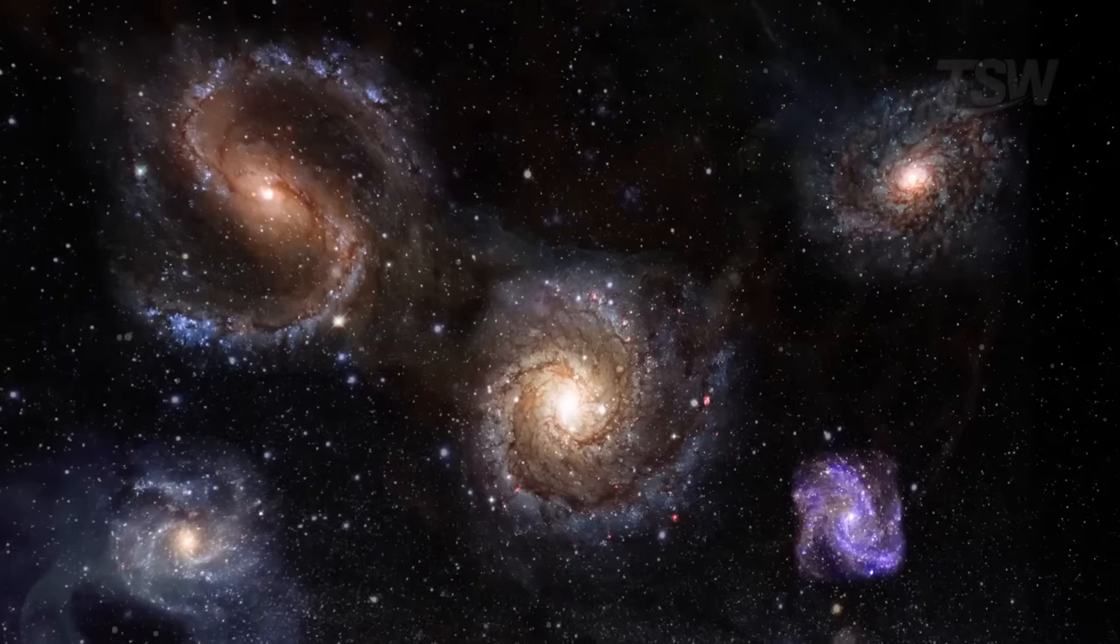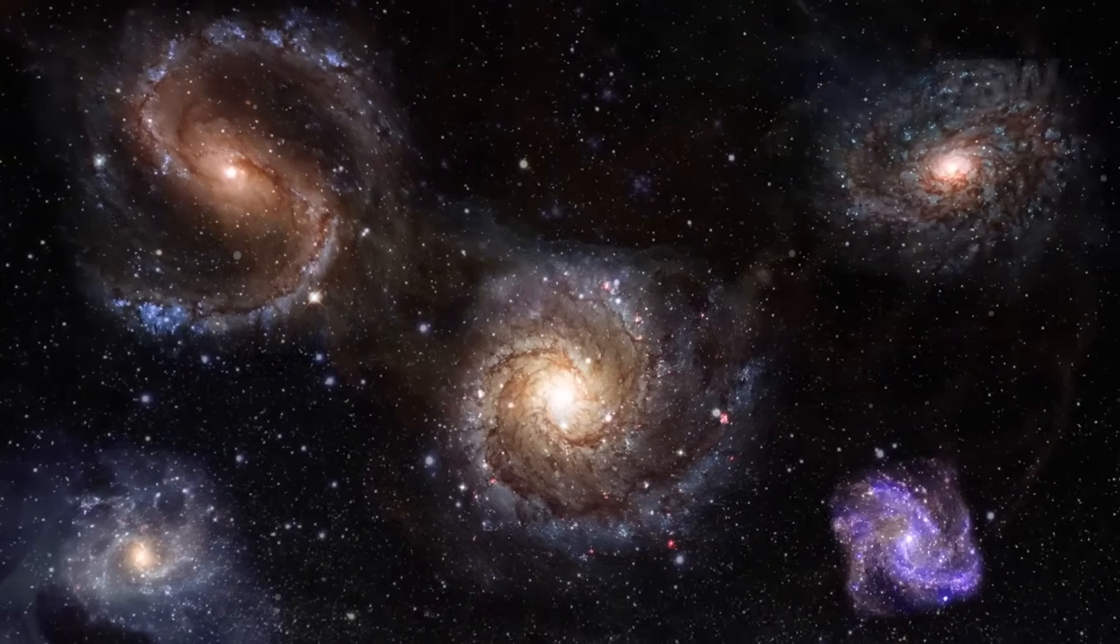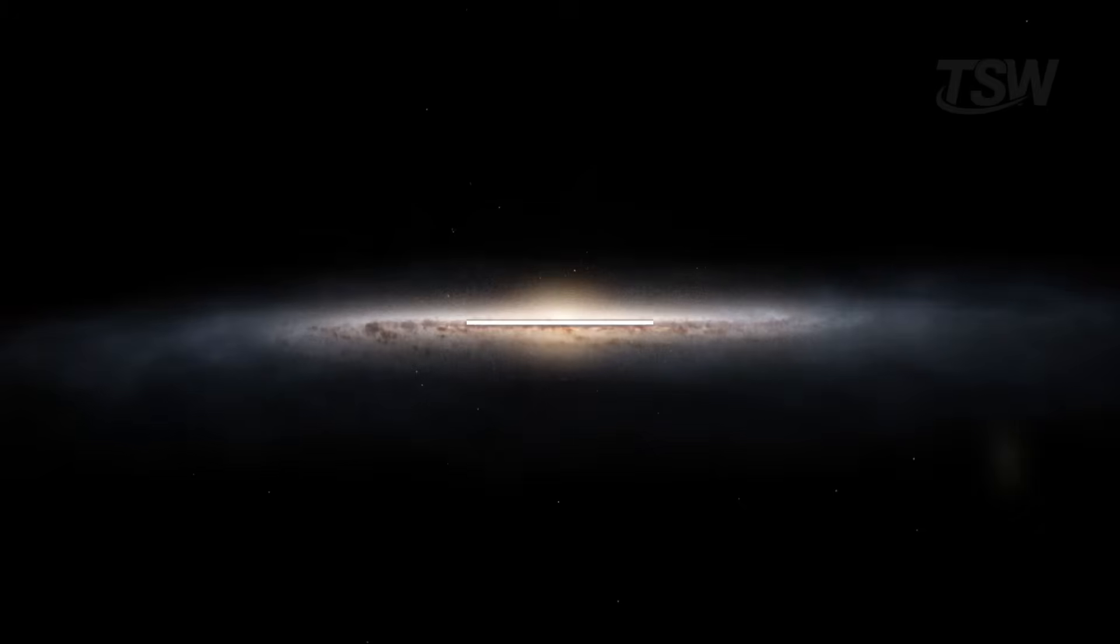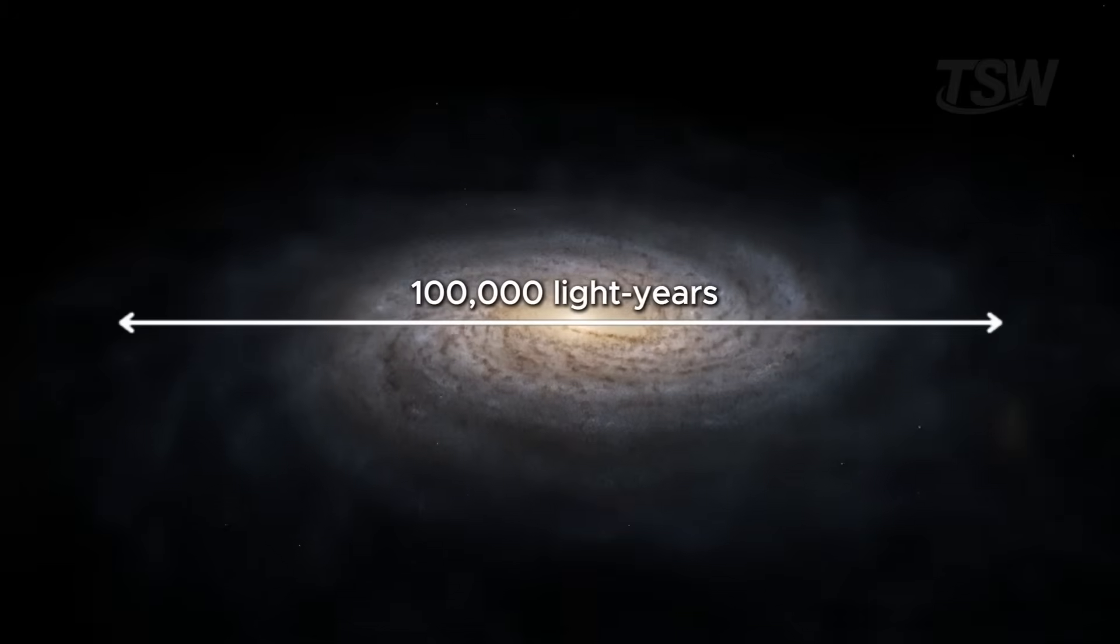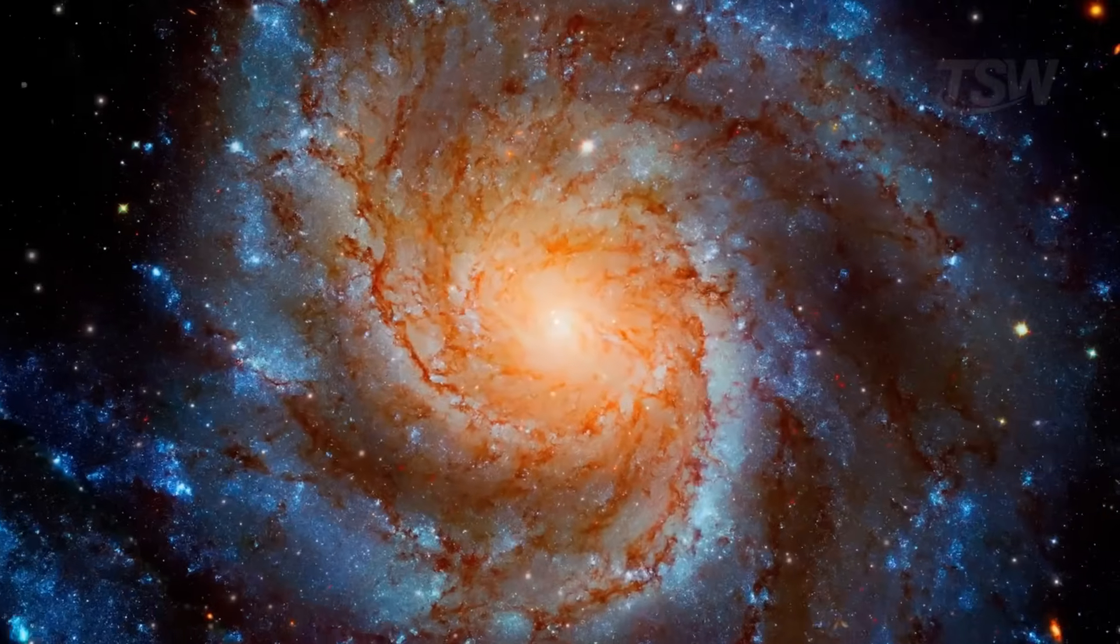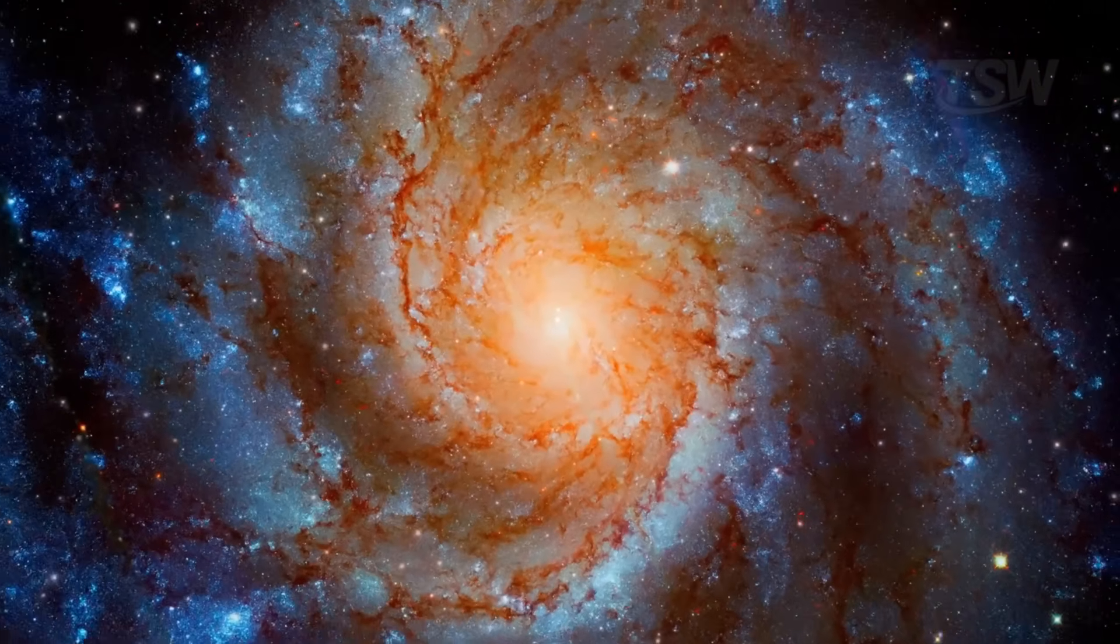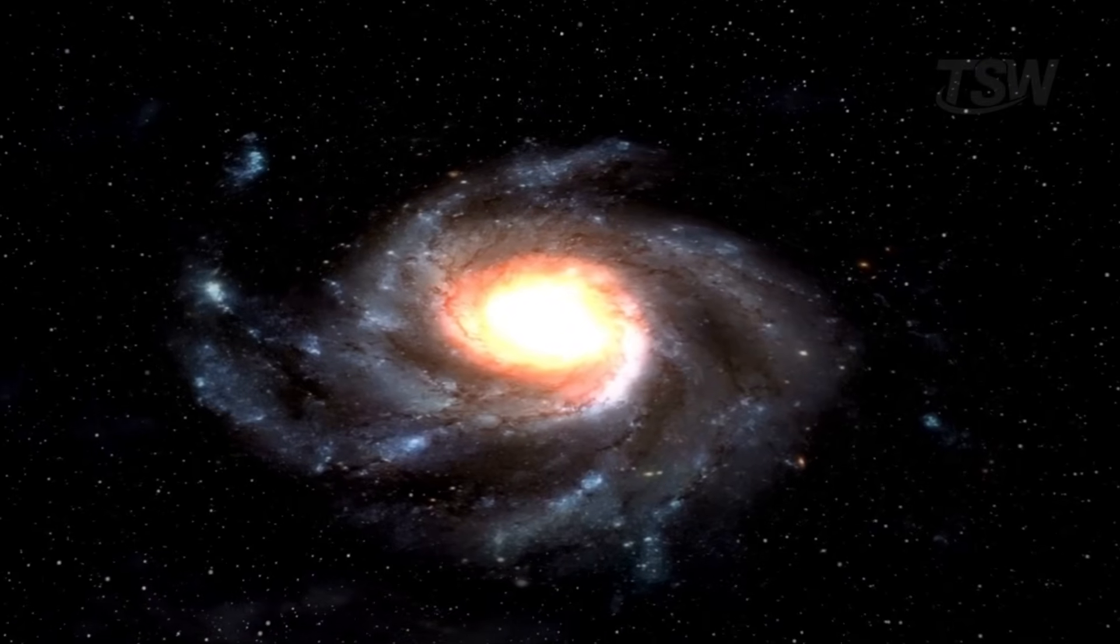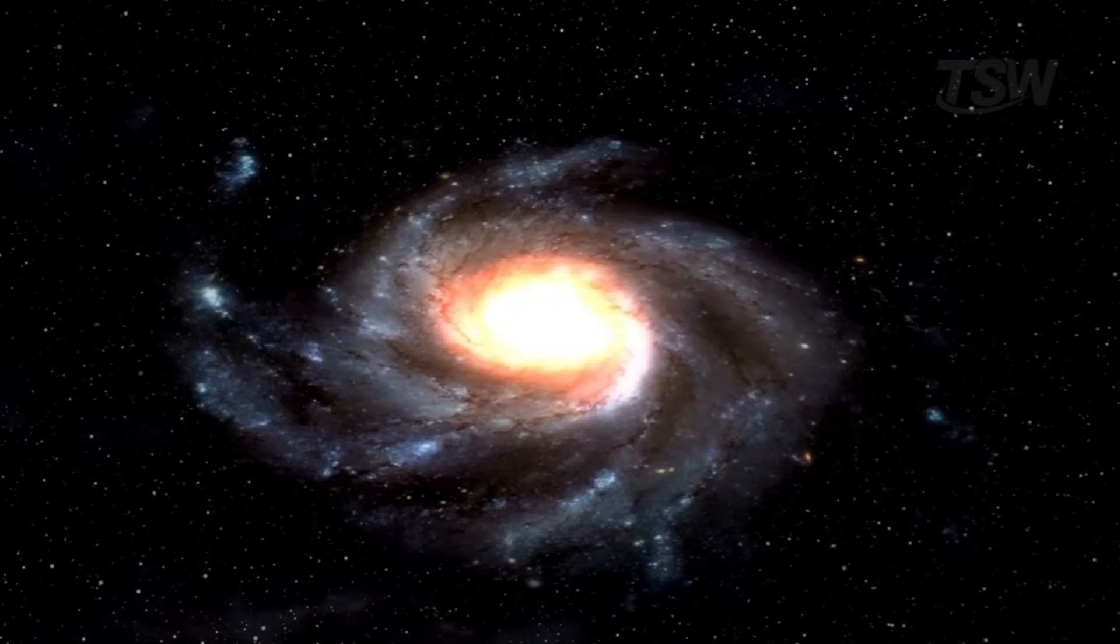Our galaxy, although similar to many others in the universe, has particular traits that make it unique. Its estimated diameter is around 100,000 light-years, a number that's a brain-twister on its own. It hosts countless stellar systems plus an invisible halo of dark matter that extends beyond the visible disk and helps hold it all together.